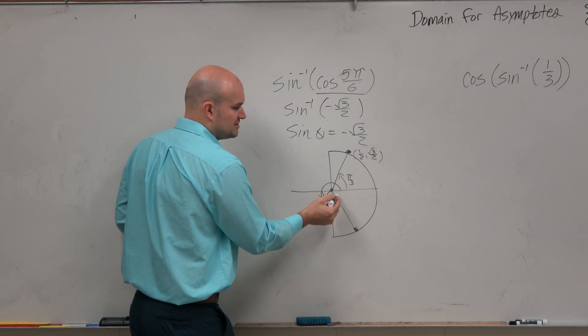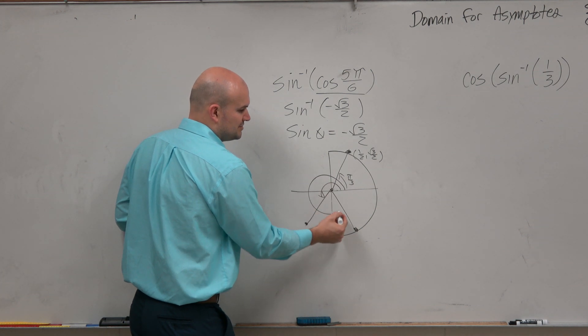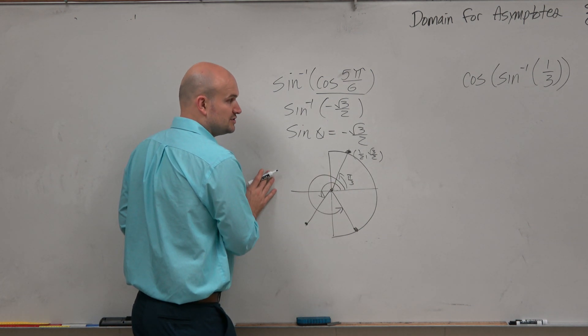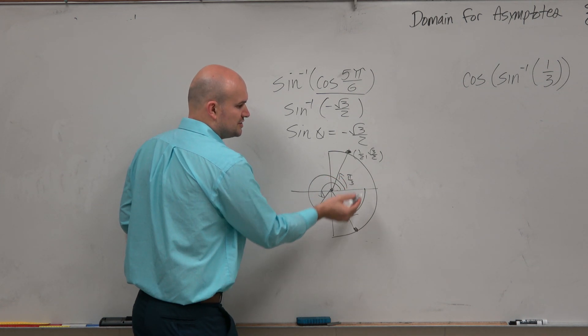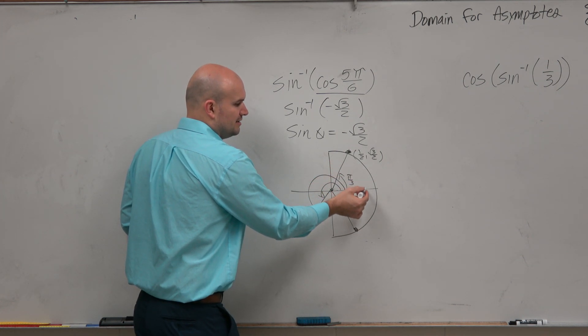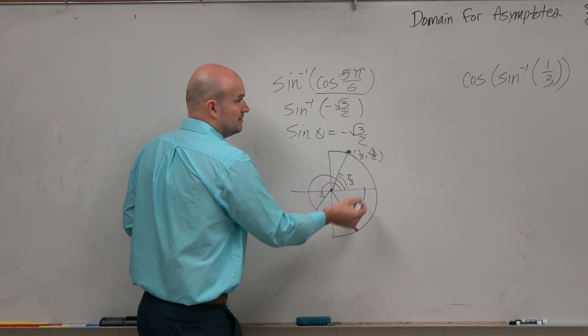And we don't want to choose this angle, and we definitely don't want to choose this angle, because both of these angles go outside of the constraint. So to remain within the constraint, we're going to want to use the negative version. So from here to here is π over 3. Then from here to here would be negative π over 3.